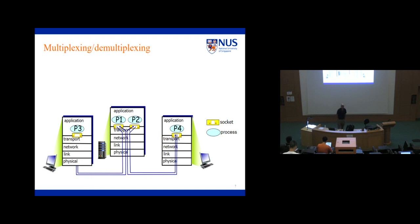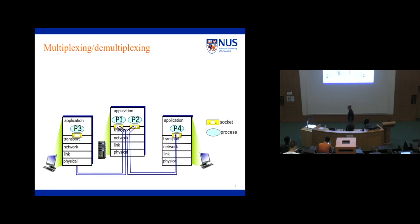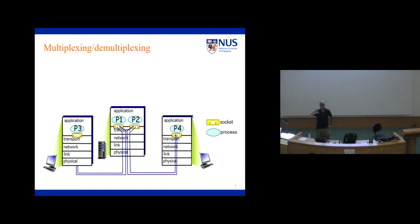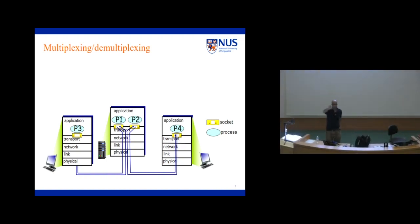Last time we got started talking about multiplexing and demultiplexing. A device may run more than one application at any given point in time. So if data comes to the transport layer and says 'I received a packet, it's for me,' but which application protocol should I deliver this packet to? That's multiplexing and demultiplexing. The transfer of data between two processes — one process is your transport layer protocol, maybe TCP or UDP, and the other is maybe your web browser or Skype — is done through an API called a socket.